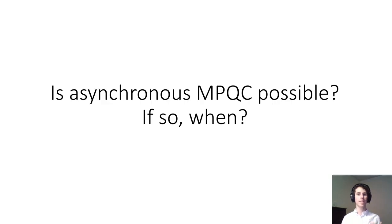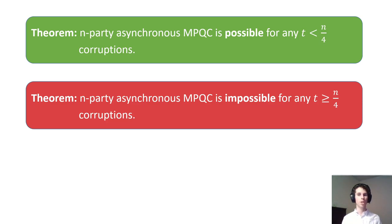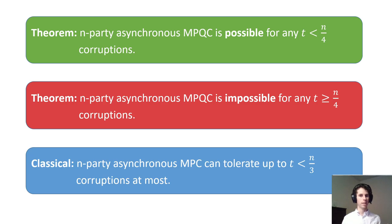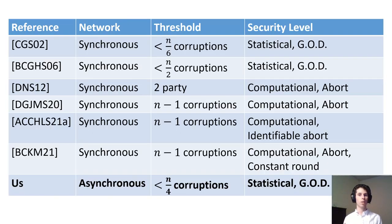In this work, we study the feasibility of quantum secure computation in the asynchronous network model. On the positive side, we show that asynchronous multiparty quantum computation is possible as long as less than one-fourth of the parties are corrupted. Furthermore, we show that this result is tight — asynchronous multiparty quantum computation is completely impossible if any more parties are corrupted. Interestingly, in the classical setting the optimal threshold is one-third. Our protocol has statistical security and guaranteed output delivery.